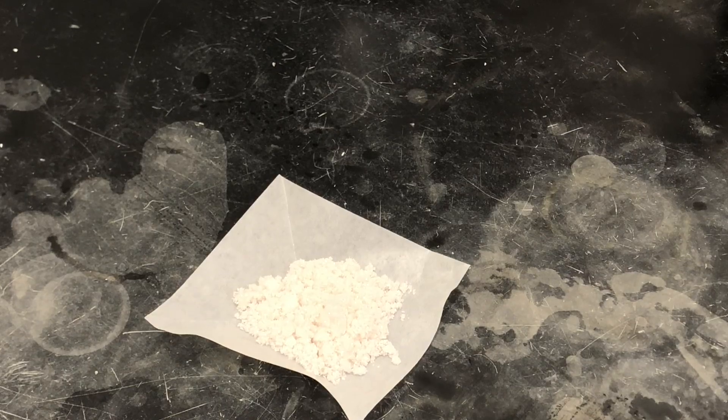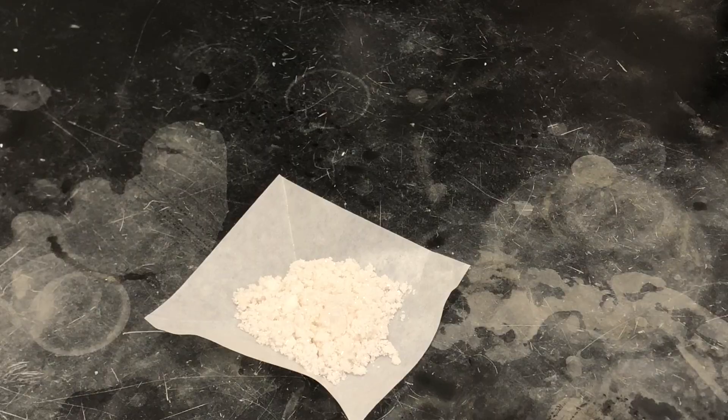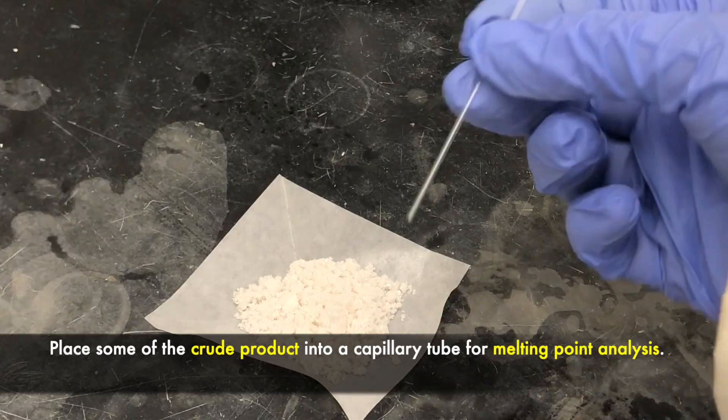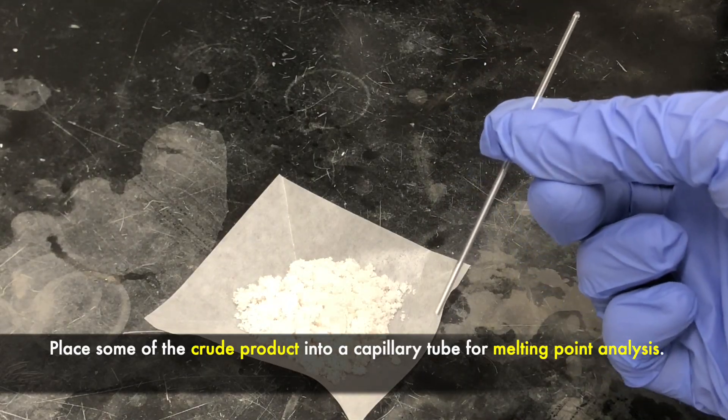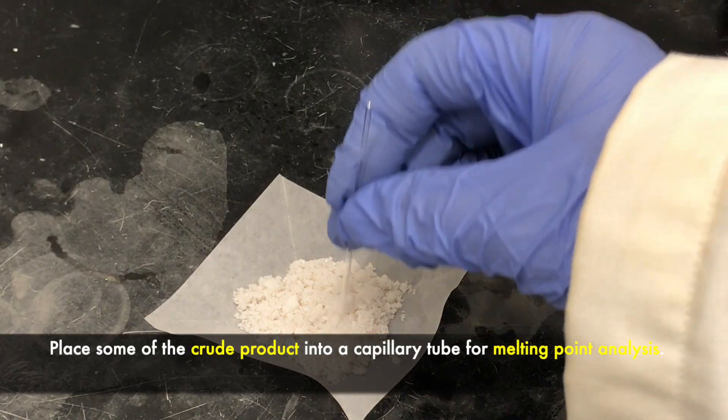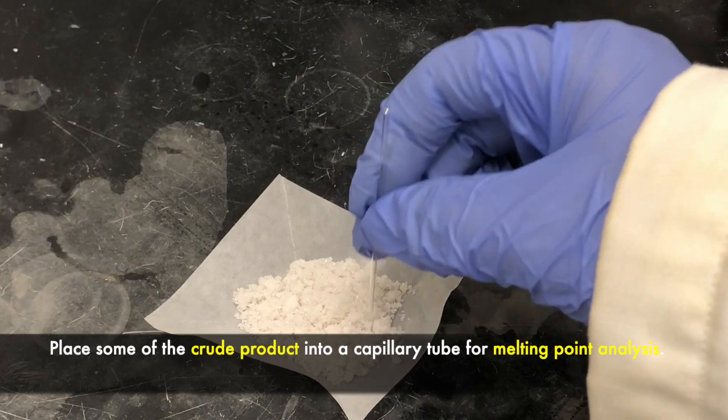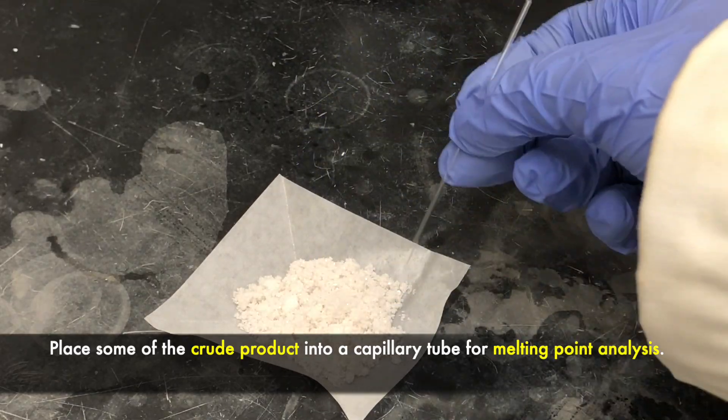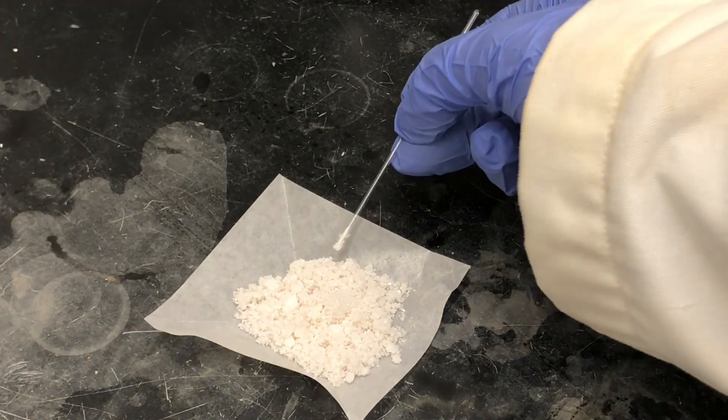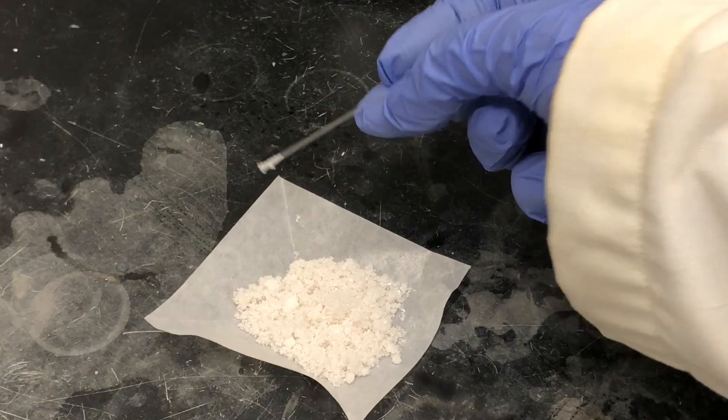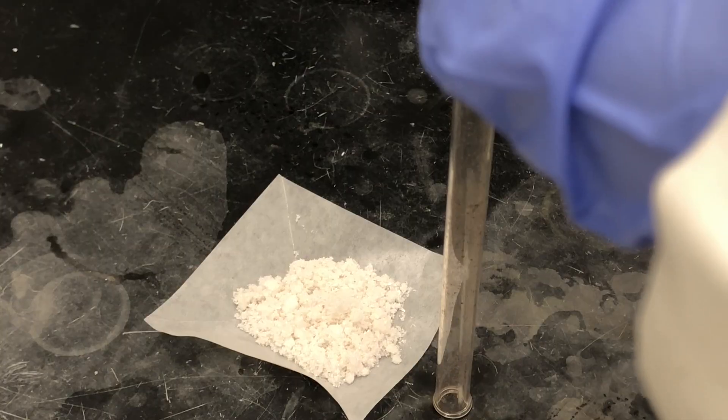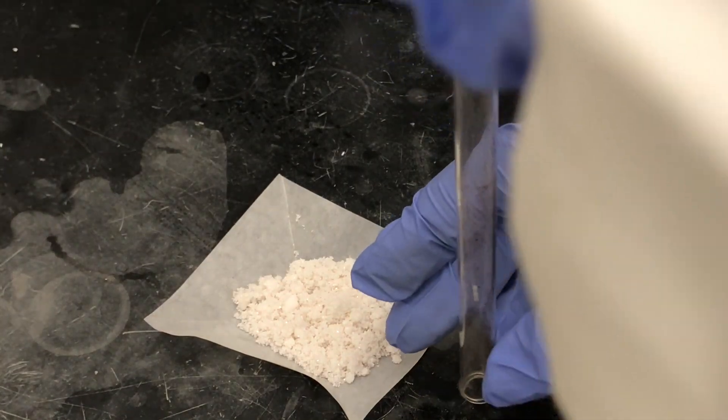Before recrystallizing the crude product, which has a slight tint of a pink color, what we'll do is place some of the crude product in a capillary melting point tube so that later we can characterize it. All we need to do is gently tap the capillary tube into the product until it fills about 2 to 3 millimeters, and then we'll place it in this hollow tube to allow the product to move from one end of the capillary tube to the other.